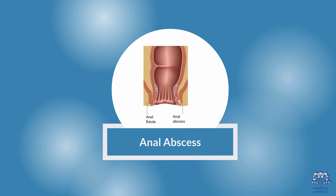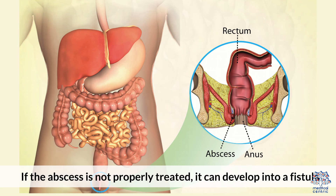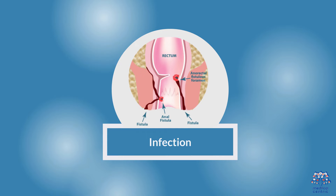Causes of Anal Fistula. 1. Anal Abscess: An anal abscess, which is a collection of pus near the anus, is the primary cause of an anal fistula. If the abscess is not properly treated, it can develop into a fistula.